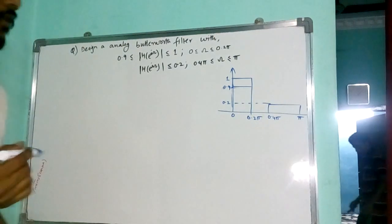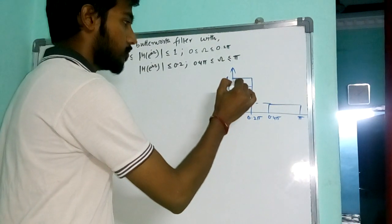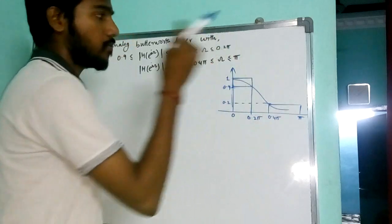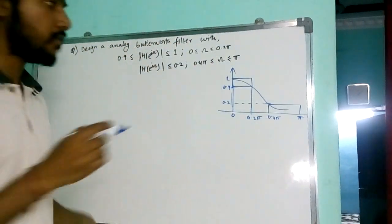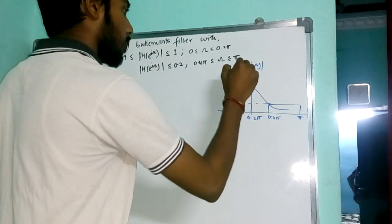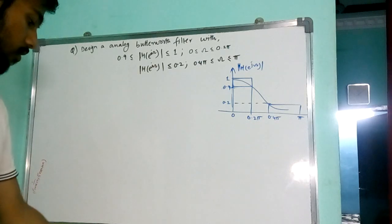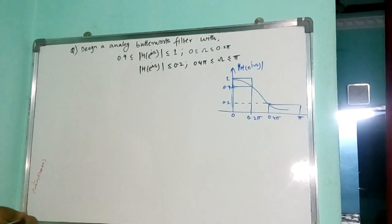So this is the given plot. And my graph will be, and this is the Butterworth graph.